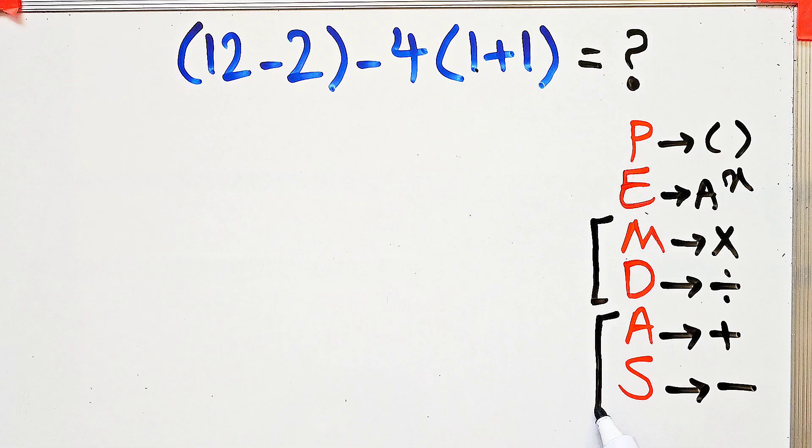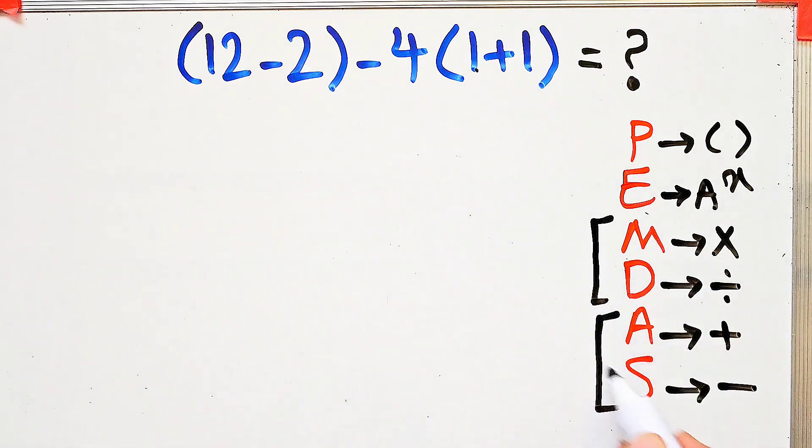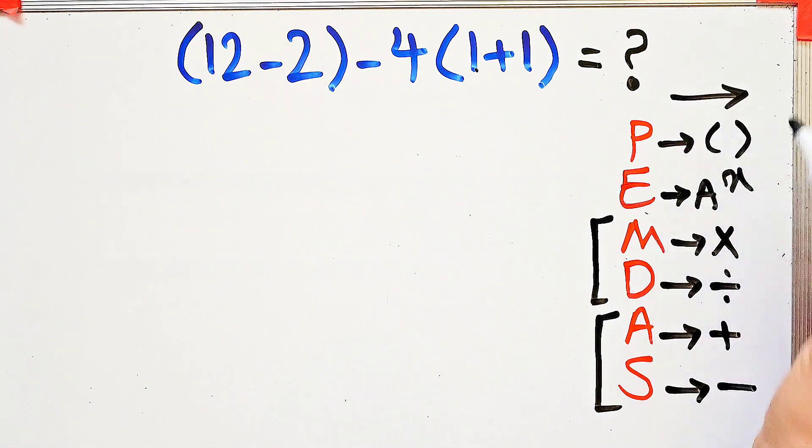Multiplication and division have the same level of priority. Also, addition and subtraction have the same level of priority. And when we have both in an expression, we start from the left and simplify.